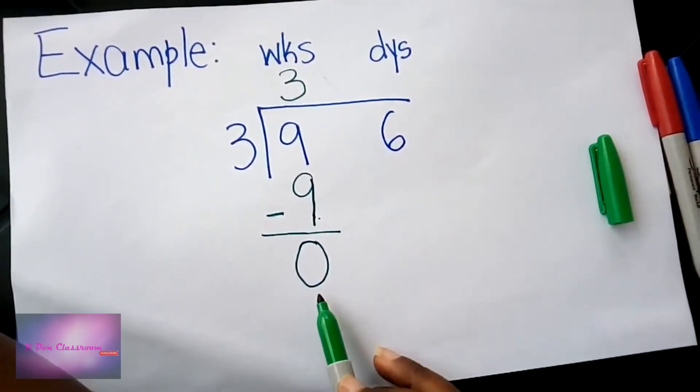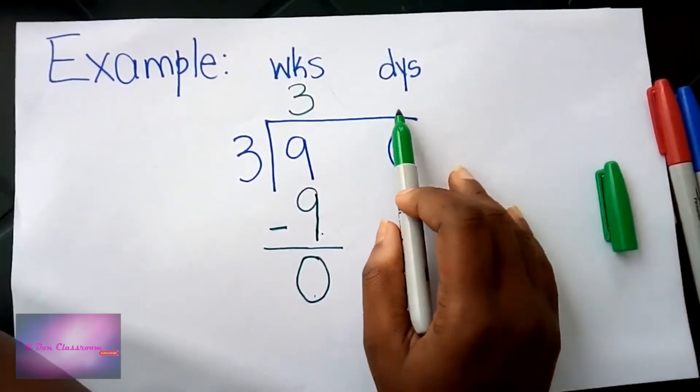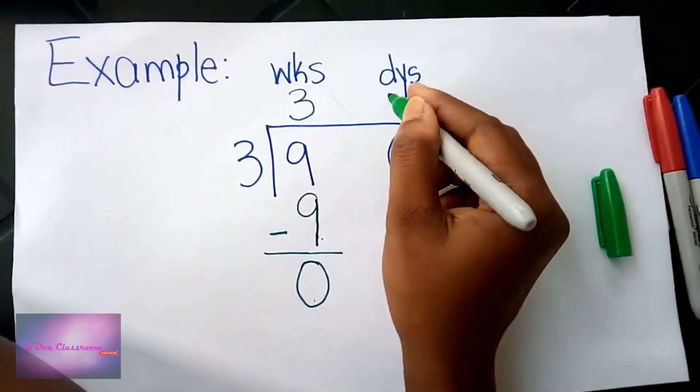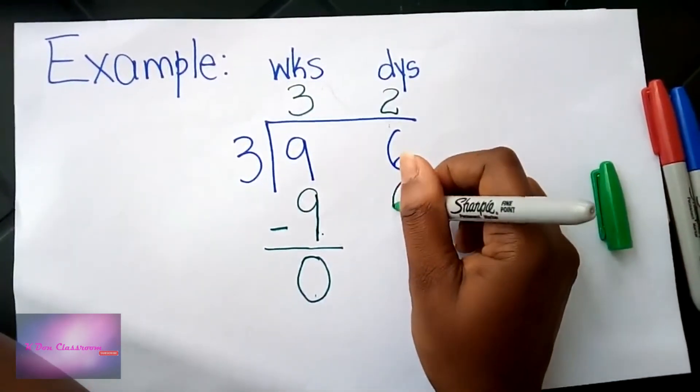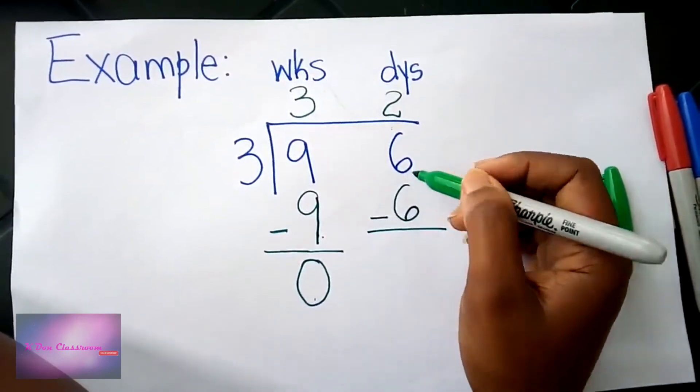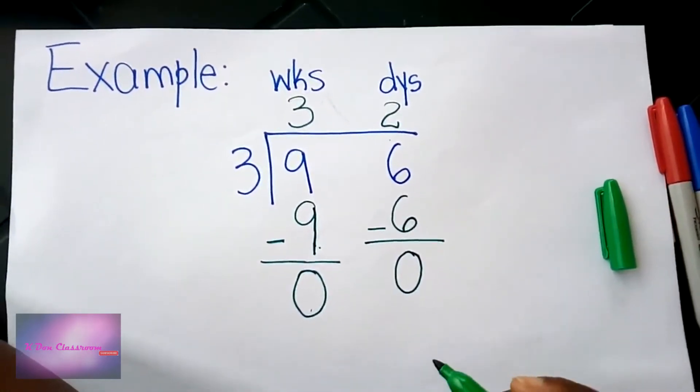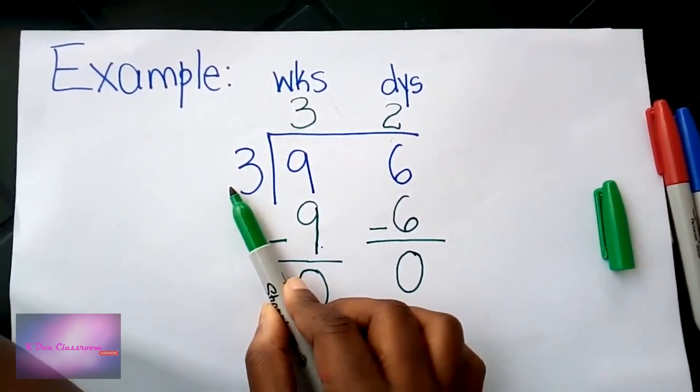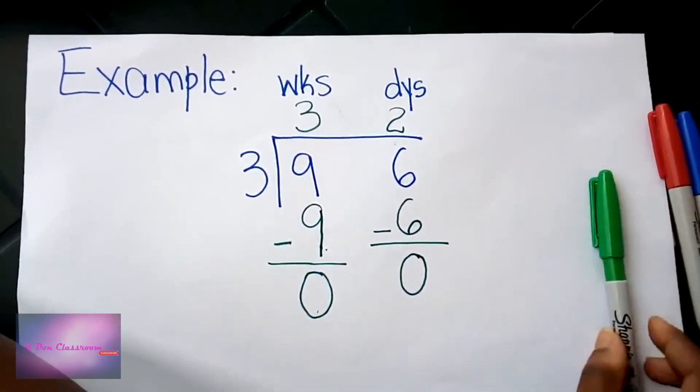I'm going to take away nine from nine, which gives us zero. We have zero here, so it means we do not have any weeks left over. So we can proceed to divide our days. Three into six goes two times, so I'm going to put my two here. Two multiplied by three will give us six. Six from six leaves us with zero. In this example we had nothing to convert. So nine weeks and six days divided by three will give us three weeks and two days.